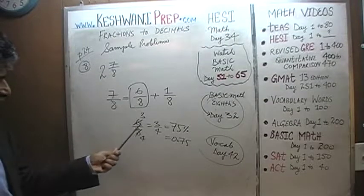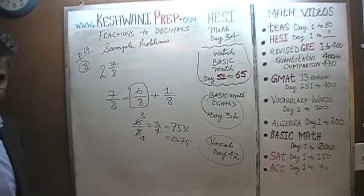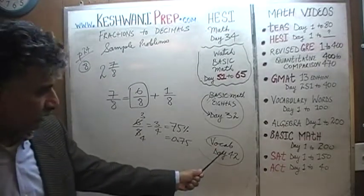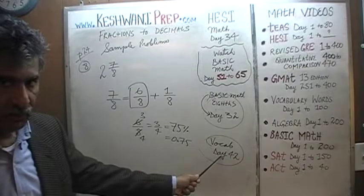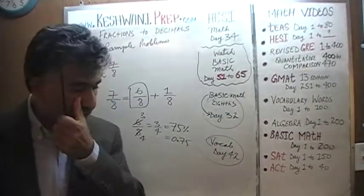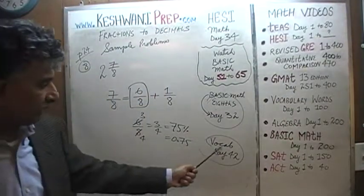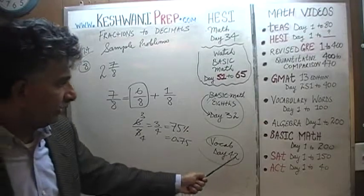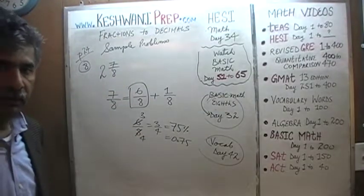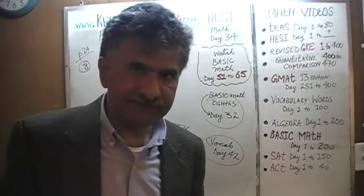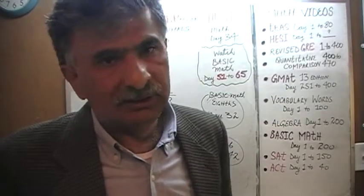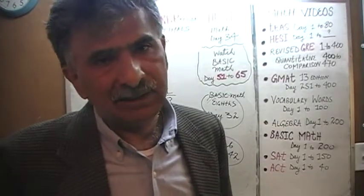6/8 is just 3 quarters incognito, which we know is 75%. The word incognito is something we learned on day number 42 in our vocabulary video — if you're interested in improving your vocabulary, type in vocabulary words day 42, and that's where we learned the word incognito, meaning in disguise.